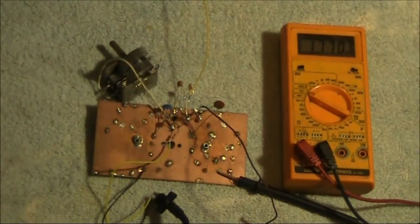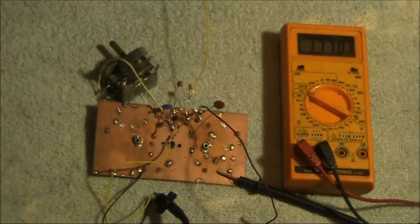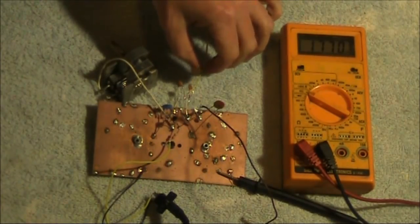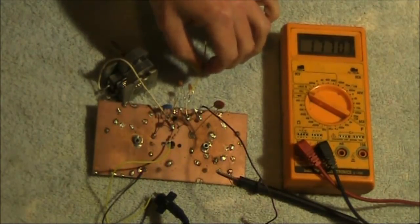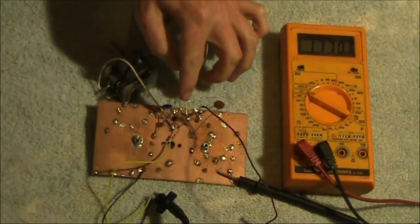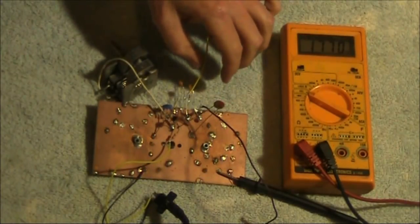This is what the oscillator sounds like with the receiver in the other room. As you can hear, there's a bit of frequency pulling. So, it's definitely a good idea to use a buffer following this stage, if you're using it in a transmitter or receiver.